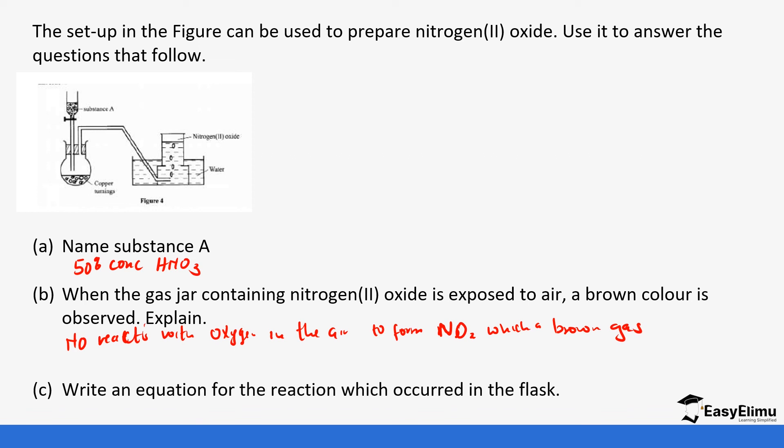Write an equation for the reaction which occurred in the flask. We said copper reacts with 50 percent nitric acid to form copper nitrate plus water plus nitrogen (II) oxide. So we balance the equation and put the correct state symbols.